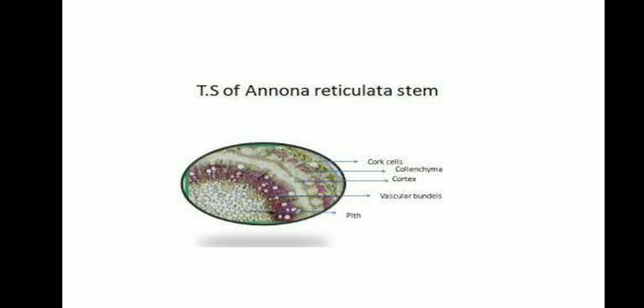We take a transverse section of an Annona stem to study the normal secondary growth. This is the transverse section of Annona reticulata, called Sitafal in Marathi. After taking the transverse section, you can see the cork cells, collenchyma cells, cortex, vascular bundles, and the pith present at the inner side. After secondary growth, secondary xylem is added at the inner side and secondary phloem at the outer side. In this way secondary growth takes place in the Annona plant, increasing the mass and volume of the plant.